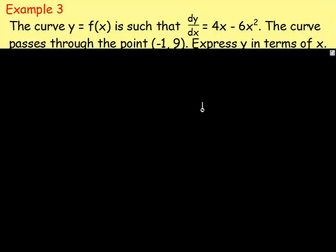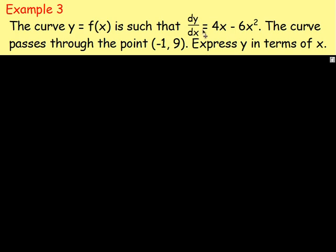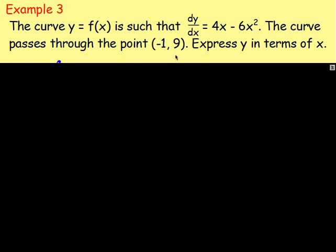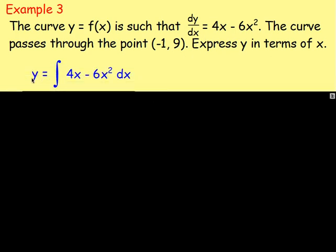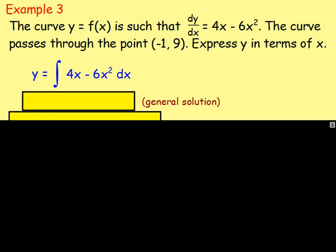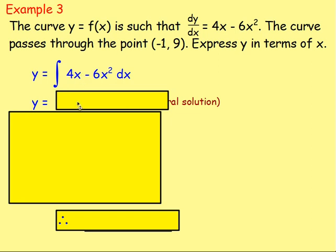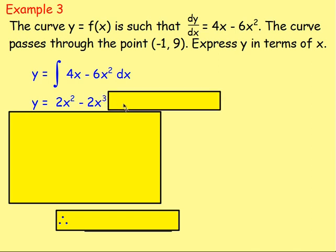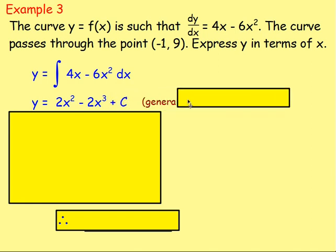Example 3. A curve y equals f(x) is such that the derivative dy/dx equals 4x minus 6x squared. The curve passes through the point (-1, 9). Express y in terms of x. To get back to y from dy/dx, you integrate. So y equals the integral of 4x minus 6x squared. Integrating that, you get y equals 2x squared minus 2x cubed plus c.